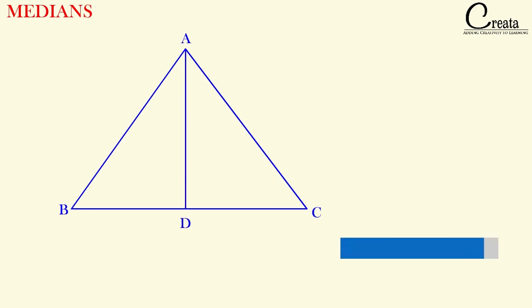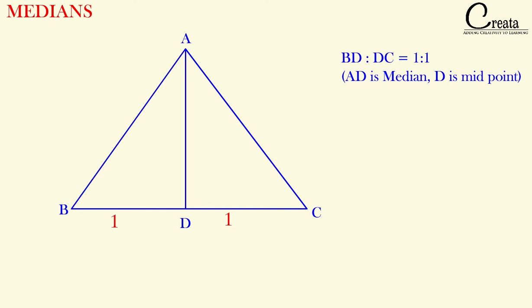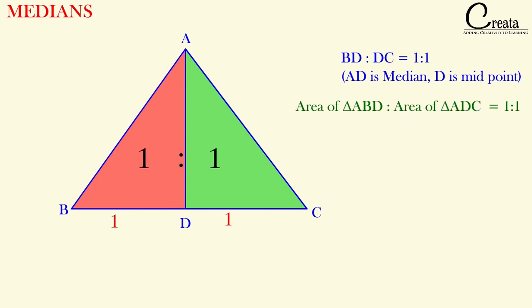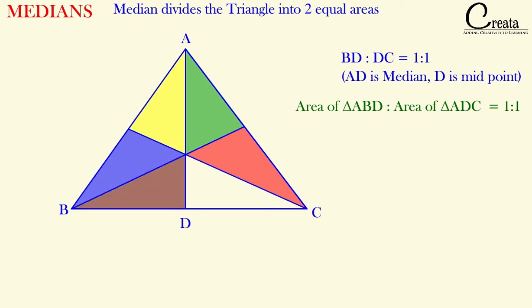Now back to our topic: medians. A median is a line segment joining a vertex with the midpoint of the opposite side. Since it's a midpoint, the ratio of those lengths is 1:1. Applying our area fundamental, the ratio of areas of the two triangles formed will also be 1:1 — same height, ratio of bases 1:1. So the median divides the triangle into two triangles of equal area. Similarly, all three medians divide the triangle into six equal parts, each with area equal to one-sixth of the complete triangle.